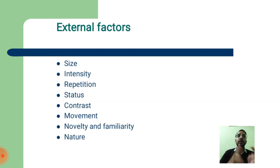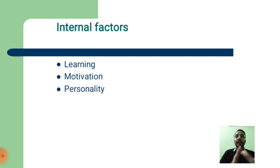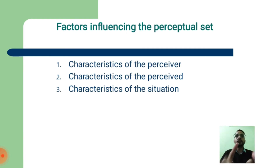External factors include: size, intensity, reputation, status, contrast, motivation, novelty, familiarity, and nature. Internal factors include: learning, motivation, and personality. These factors influence the perceptual set.